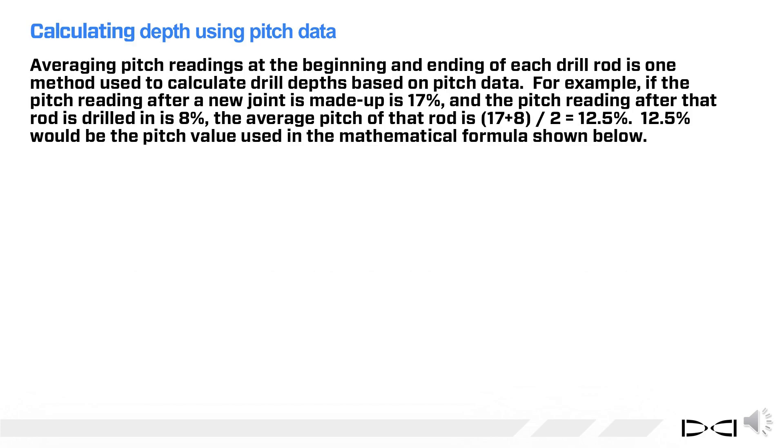Averaging pitch readings at the beginning and ending of each drill rod is one method used to calculate drill depths based on pitch data. For example, if the pitch reading after a new joint is made up is 17%, and the pitch reading after that rod is drilled in is 8%, the average pitch of that rod is 17 plus 8 divided by 2, or 12.5% pitch.